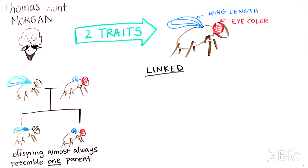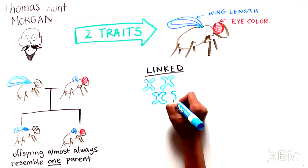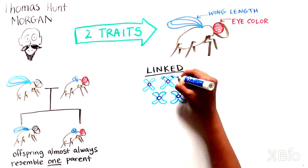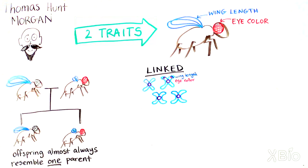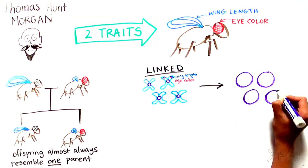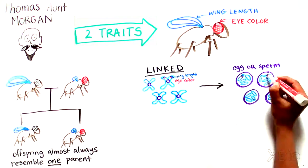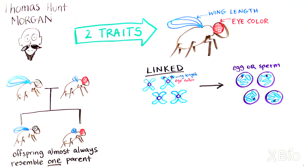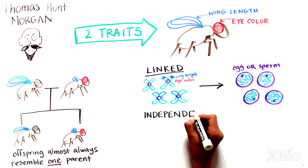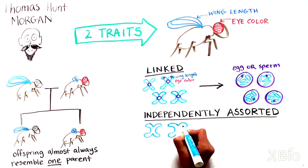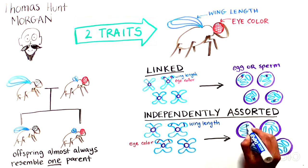So what was going on? Morgan guessed that the genes coding for these traits must lie on the same chromosome. So when sperm or eggs are formed, the two genes from the same parent always went into the same sperm or egg cell. They stayed linked together. In contrast, if they were on different chromosomes, then the genes and their traits should sort independently, as described by Mendel.